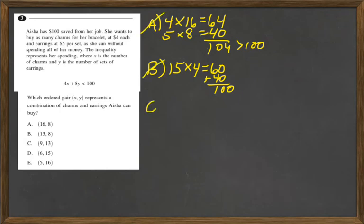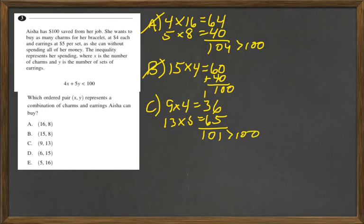C is 9 times 4 equals 36, and 13 times 5 is equal to 65, and that gives us 101, which is greater than 100. So C is out.